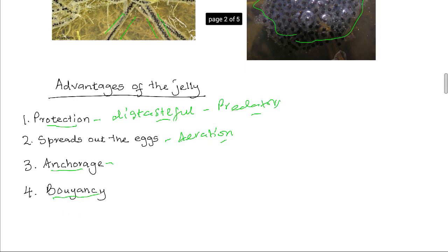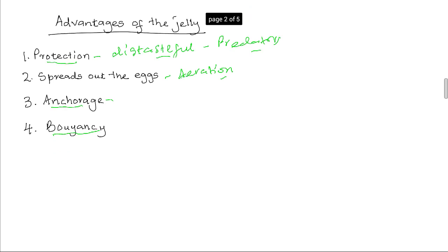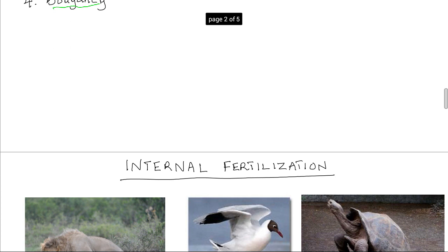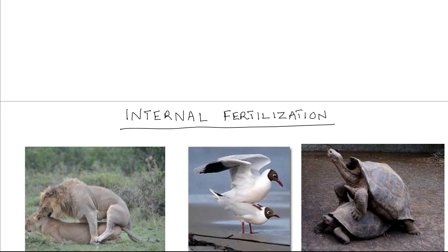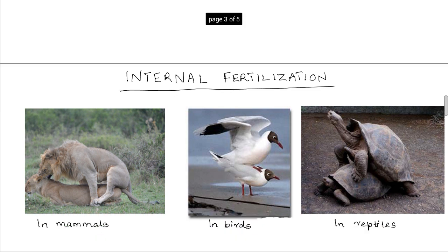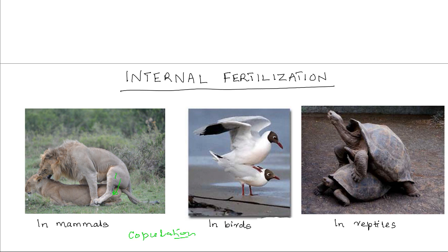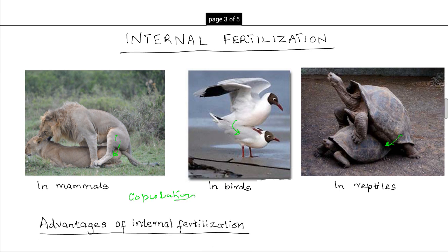That is the external fertilization that occurs in animals such as fish and amphibians. The other type of fertilization is internal fertilization, where the male and female gametes fuse inside the female's body. It occurs in animals such as mammals, birds, and reptiles. For internal fertilization to take place, the sperms must be introduced into the female's reproductive tract during copulation. The male introduces the sperms into the female's reproductive tract during copulation, and once the sperms are inside the female's body, fertilization occurs internally.